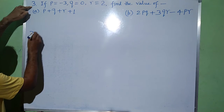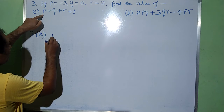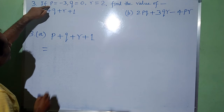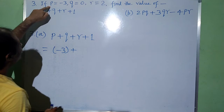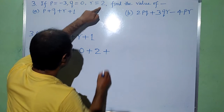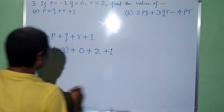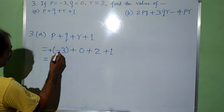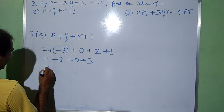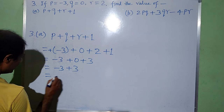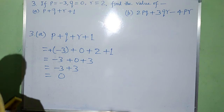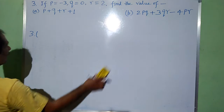Now this third problem, part a. The algebraic expression is p plus q plus r plus 1. It will be: value of p is minus 3, plus value of q which is 0, plus value of r which is 2, plus 1. Now plus into minus gives minus 3, plus 0, plus 2, plus 1 gives 3. So it will be minus 3 plus 3, which is 0 only.